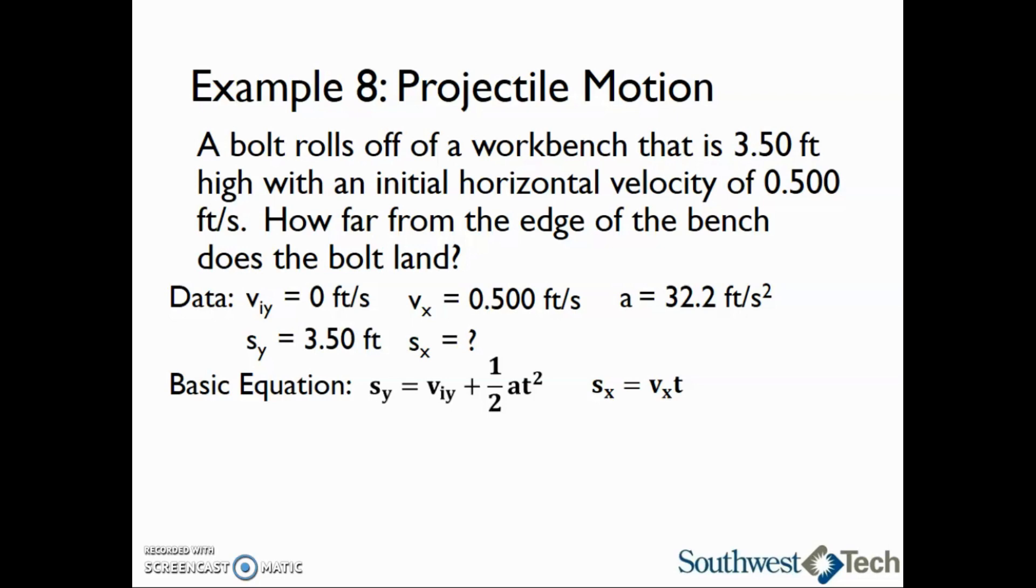Now, to find the working equation in y, we have to rearrange to solve for t. Luckily, there is no initial velocity in y, so that entire term drops out and we can multiply both sides by 2 divided by a and then take the square root. Therefore, the first working equation is time equals the square root of 2 times the distance in y divided by acceleration. The working equation in x is the same as the basic equation, so the distance in x equals the velocity in x multiplied by time.